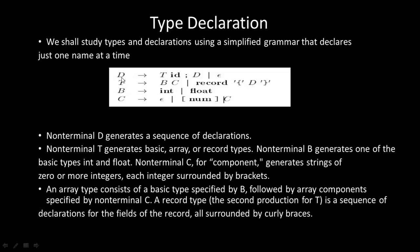D is our starting symbol and produces T id. T produces either basic type B followed by component C, or a record. B produces basic types — integer or char. C is the component, which can be zero or more integers surrounded by brackets.